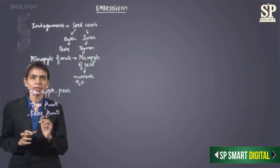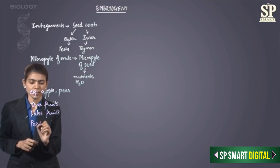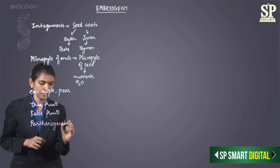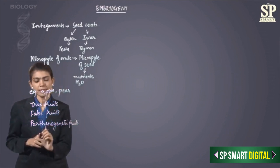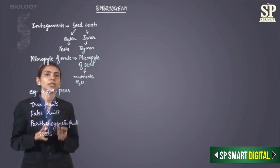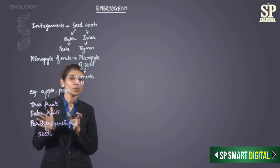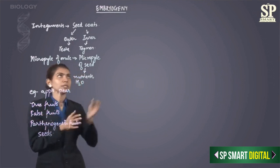There is also another category of fruits which are called parthenocarpic fruits. These are basically seedless because the fruit is formed without fertilization taking place. So that was about types of fruits. Now we go on to germination of the seed.